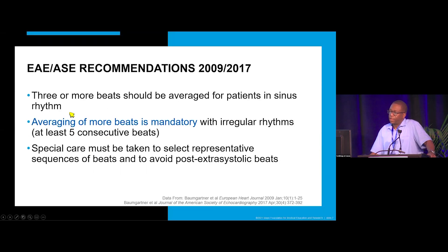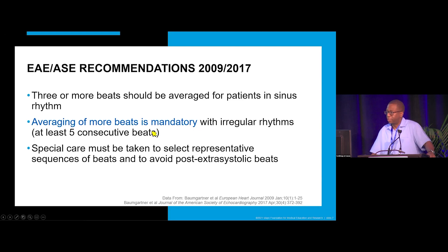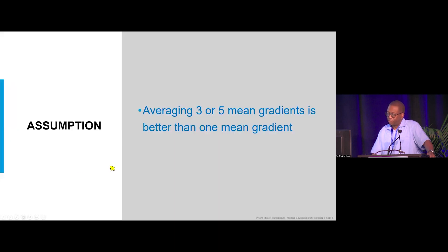The guidelines recommend averaging three or more beats in patients in sinus rhythm, and averaging five or more mean gradients in patients with irregular rhythms such as atrial fibrillation. Special care must be taken to select representative sequences of beats and to avoid post-extrasystolic beats.